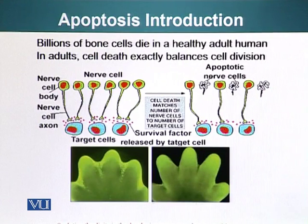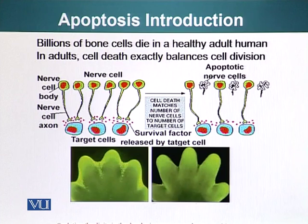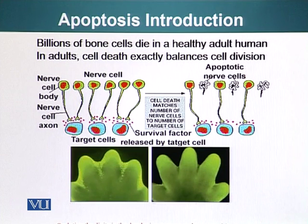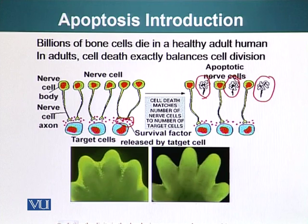Billions of cells, especially bone cells living in the bone, die in healthy humans. In adults, cell death exactly balances cell division in most tissue. During development, cell death is a very important phenomenon. For example, nerve cells send out axons to target cells, and cell death matches the number of nerve cells to the number of target cells. Axons that don't reach target cells go through apoptosis because these cells cannot perform their function.